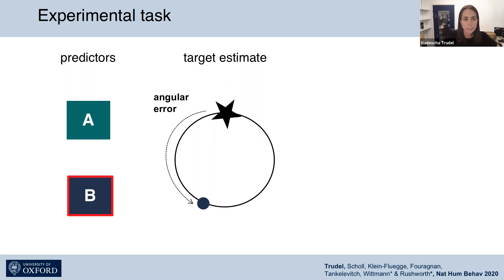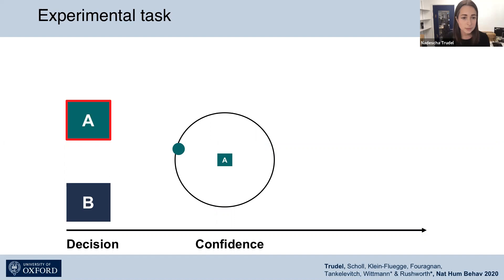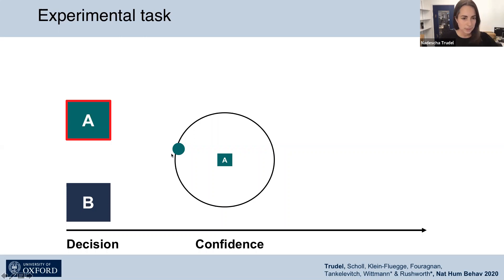First, you make a choice between predictors in the decision phase, then you enter the second phase of the trial, which we call the confidence stage. Here we ask participants to make a confidence judgment — how confident they are that this predictor will perform accurately in predicting the target location. They are presented with the circle, they see the selected predictor in the middle, and the predictor's estimate on the circle outline. Two stripes appear representing an interval, which can be modified in size depending on how confident the participant is in the predictor's performance.